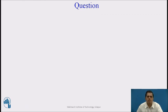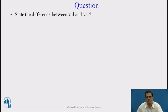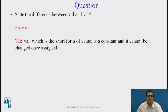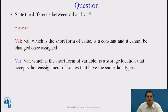Now we will see a review question. Question: State the difference between val and var. Answer: val, which is the short form of value, is a constant and it cannot be changed once assigned. var, which is the short form of variable, is a storage location that accepts reassignment of values that have the same data type.